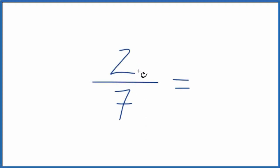Let's express the fraction 2 sevenths in decimal form. So 2 over 7, what is that in decimal form?